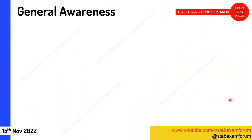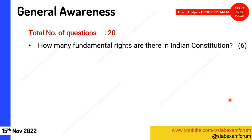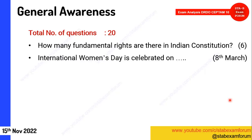Coming to General Awareness — again, it was very simple compared to the previous two days, so students benefited. There were around 20 to 25 questions. The first was from polity: fundamental rights in the Indian Constitution — the answer is six, not seven. The right to property was removed. This was covered in our Constitution video, chapter 10 or 11.